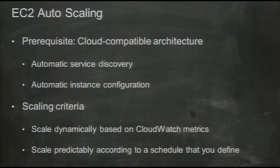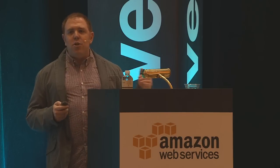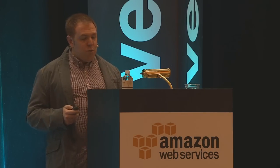EC2 offers two ways to configure your auto-scaling groups: you can scale automatically and dynamically based on metrics you define in CloudWatch, or scale by schedule. We don't really trust the CloudWatch metrics in our case — we're not sure CPU usage or network usage quite represents how much server capacity we need at any time. So we do it just by time, and that still works well for us because we have pretty predictable traffic patterns. If you have similar predictable schedules, that should work well for you as well.